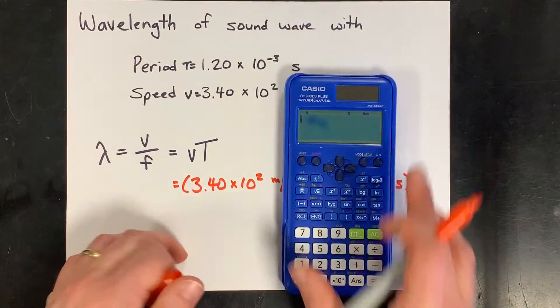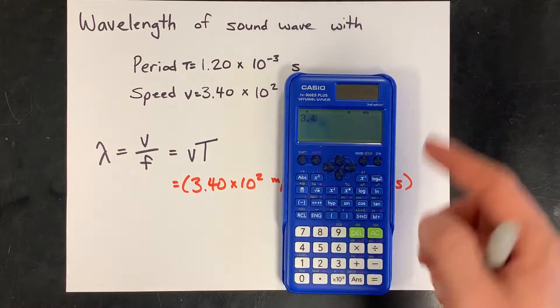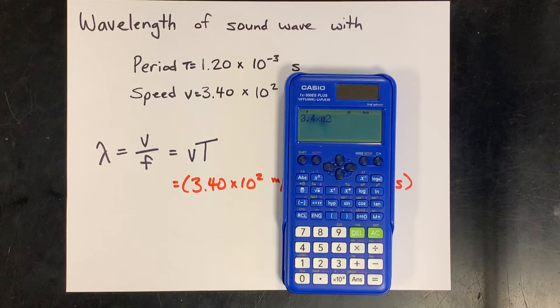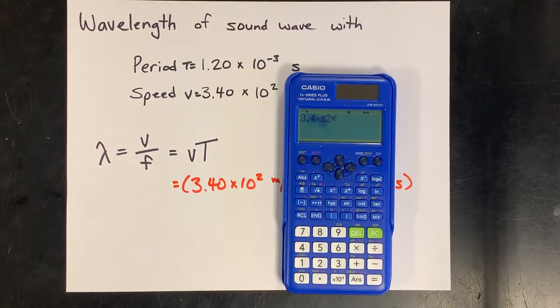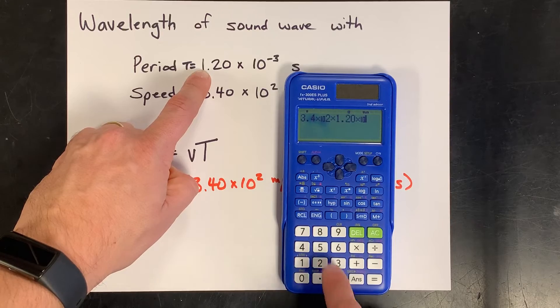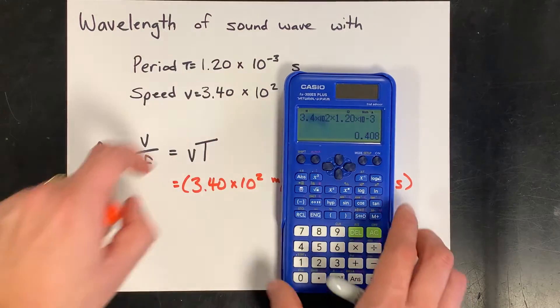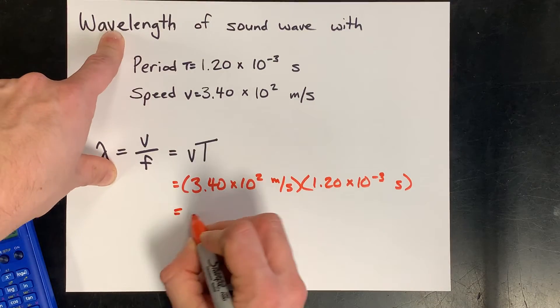Let's do that on the calculator to get the number. Then we'll show you what the units do. Times 10 to the power of 2 for speed, and we're going to multiply that by 1.20 times 10 to the power of negative 3.